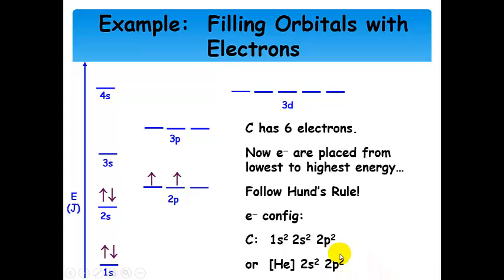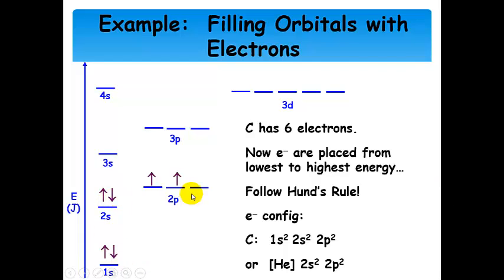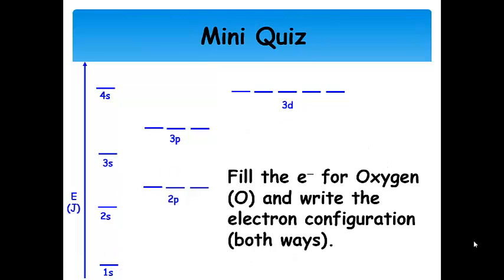Carbon follows the same pattern. All the 2s and 2p electrons are valence electrons. Notice we follow Hund's rule to obtain the ground state electron configuration. The electron configuration doesn't explicitly show spin, so if you want to know whether there are unpaired electrons, you write out the three 2p orbitals individually and slot in the two electrons. Following Hund's rule, you would see two unpaired electrons for carbon. The 1s² group are core electrons and can be substituted with the previous noble gas notation.